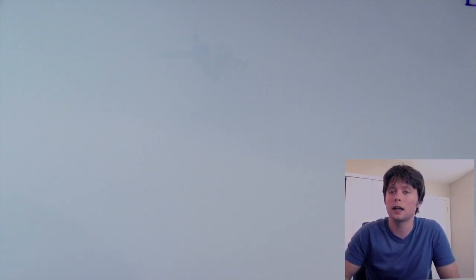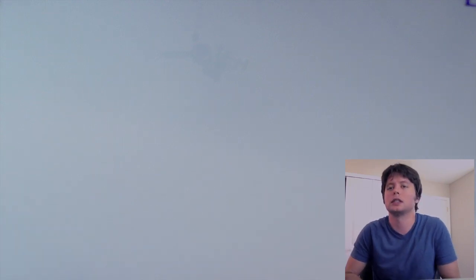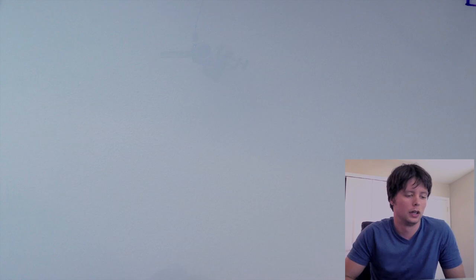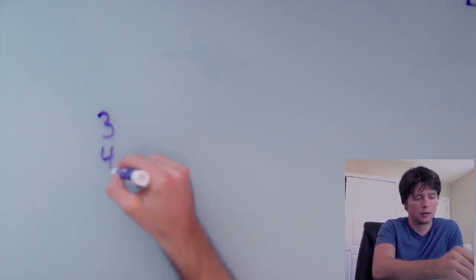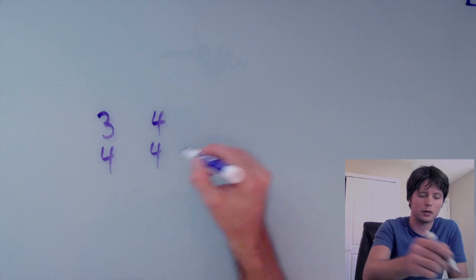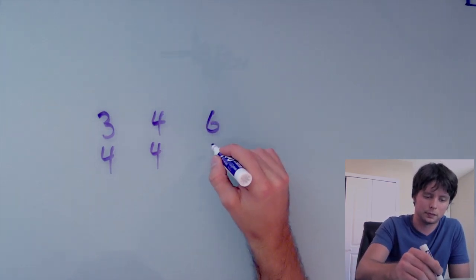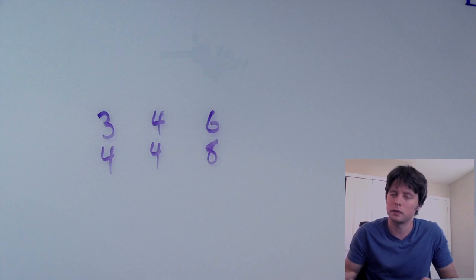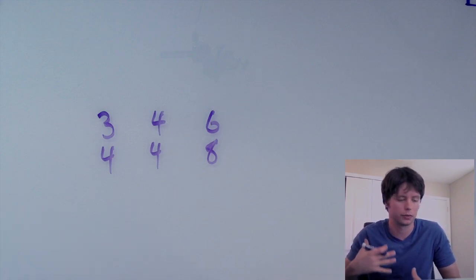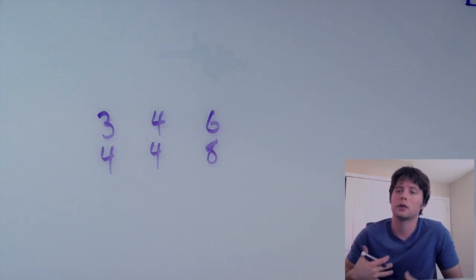Hi everybody. Today I'm going to do my best to explain time signature. Now time signatures look something like this - they're just two numbers stacked on top of each other. And what they do is they describe the rhythm of a piece of music, kind of tell you how it's going to be organized and how you should interpret it.